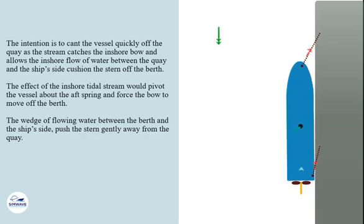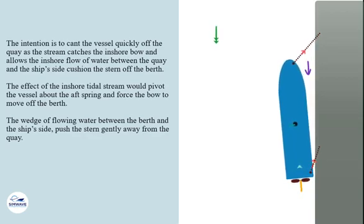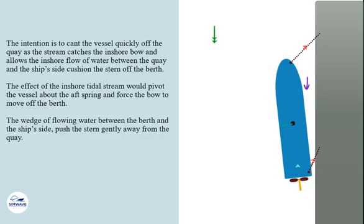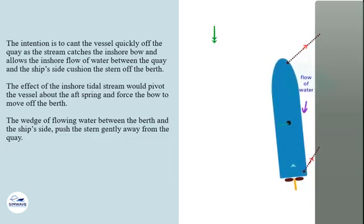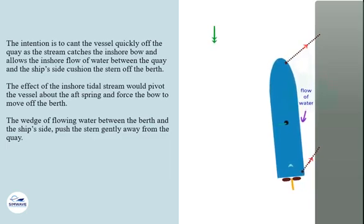The intention is to cant the vessel quickly off the quay, as the stream catches the inshore bow, and allows the flow of water between the quay and the ship's side to cushion the stern off the berth.